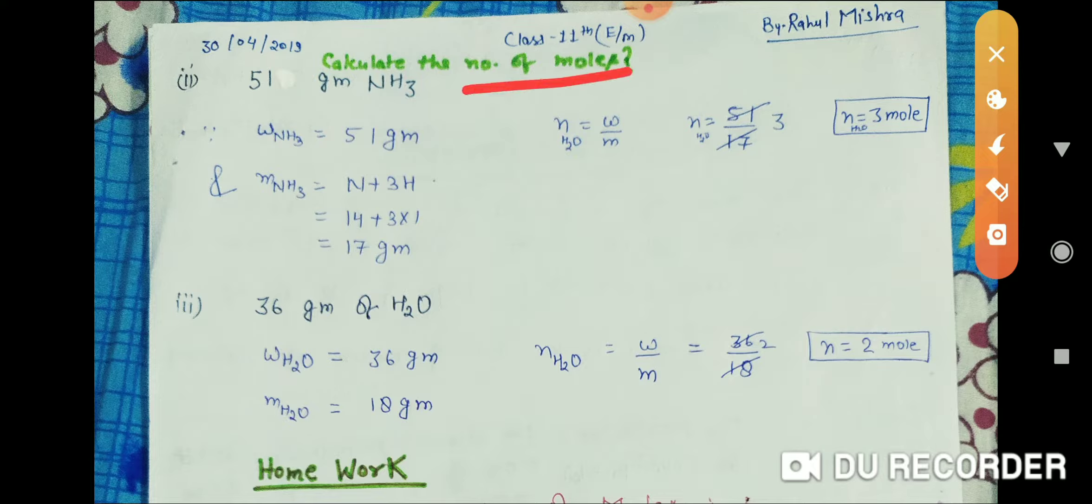This problem is also based on mole concept. Calculate the number of moles present in 51 grams of NH3. That means you have to find the number of moles present in 51 grams of NH3.